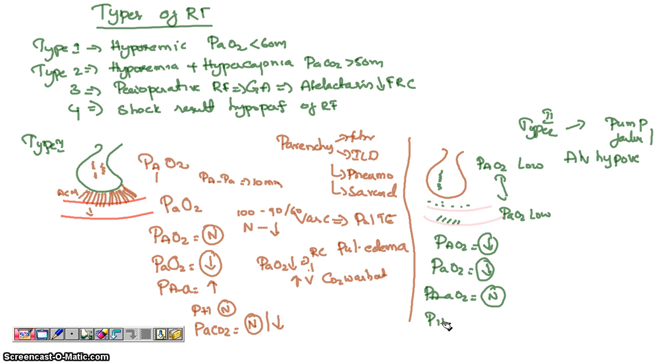Now what happens to pH and PaCO2? As I told you, it is a ventilatory defect, that is a pump defect. Whenever the ventilation is involved, it not only causes decreased entry of O2, but also it decreases the exit of CO2.